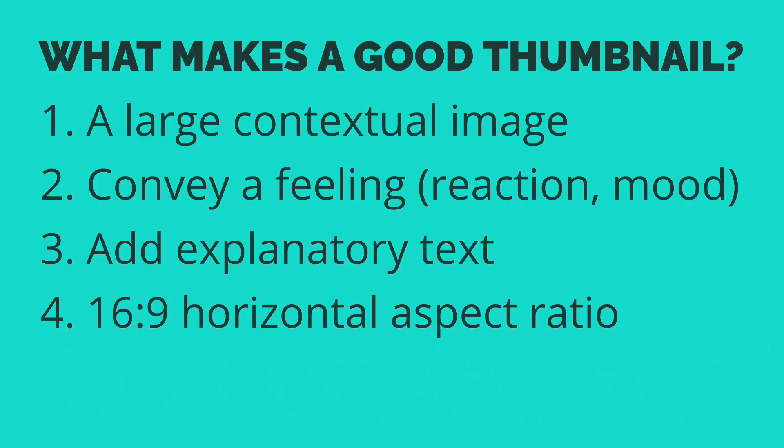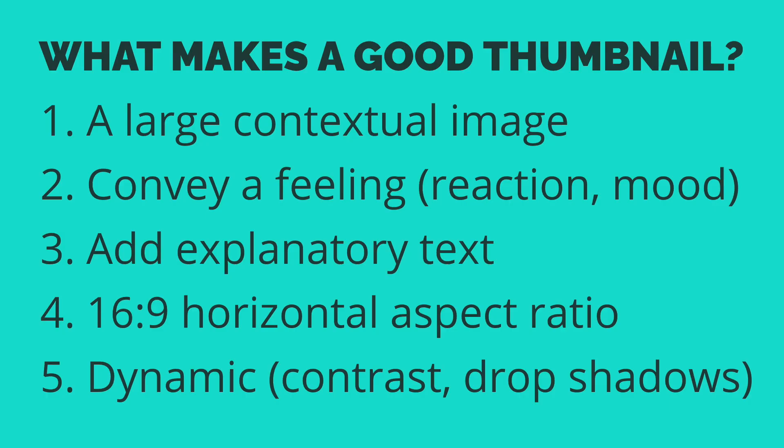And of course, we want this to be in 16 by 9 aspect ratio horizontal for a YouTube thumbnail. We also want it to be dynamic with highlights and shadows — things like drop shadows on elements and different contrasts throughout the photo, so lighter and darker parts of the thumbnail. So today I'm going to use all of these criteria and hope we can get a thumbnail that checks off all of these boxes, making thumbnails with a ton of customization using AI tools in a cloud-based content creation studio.